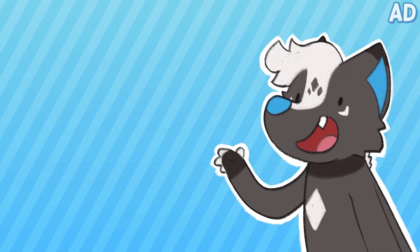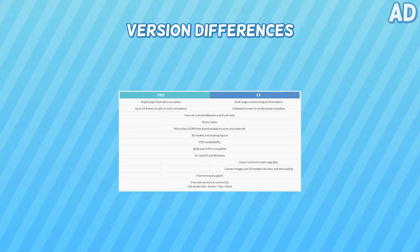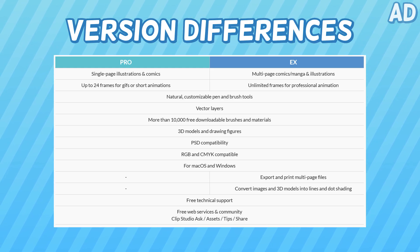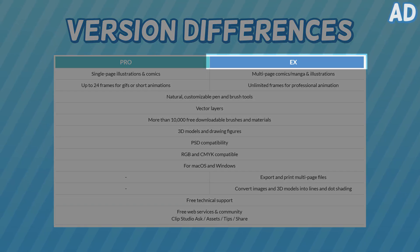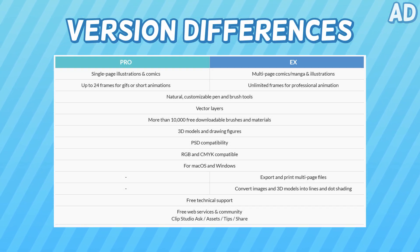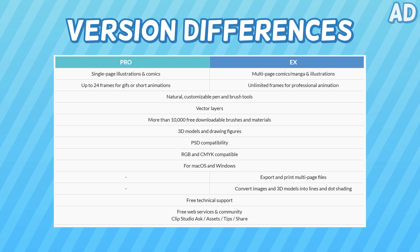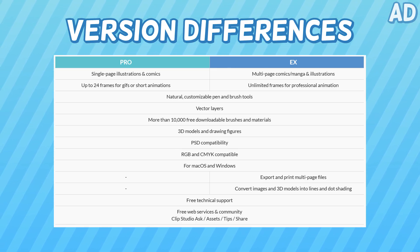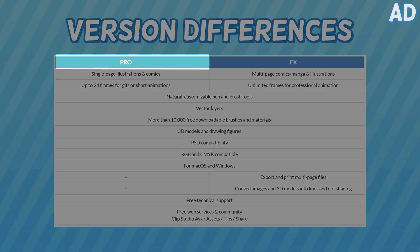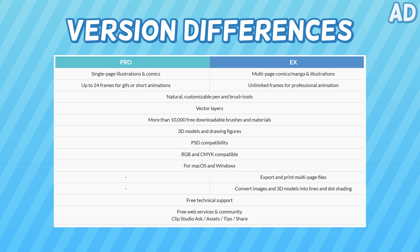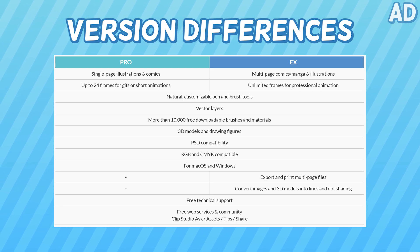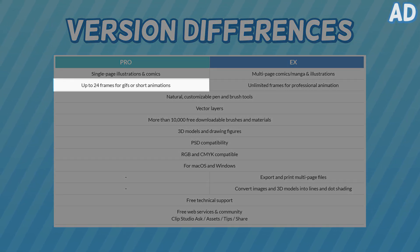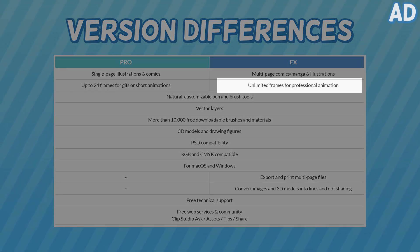Let's quickly go over versions. Clip Studio Paint currently has two different versions. X is the one I'm using and recommend as it has a lot more features specifically for animation. However, you can still follow this tutorial if you only have the Pro version. The main difference is that animations in Pro are limited to a maximum of 24 frames, whereas in X they're unlimited.